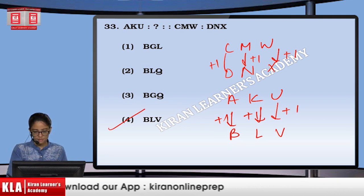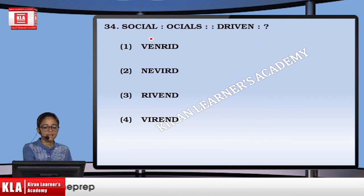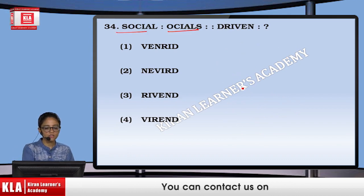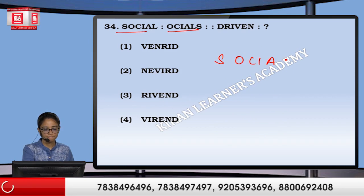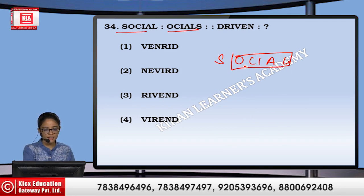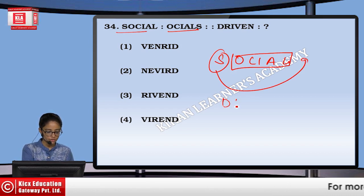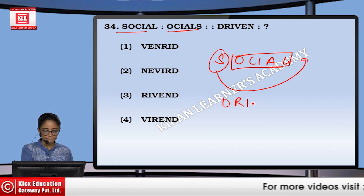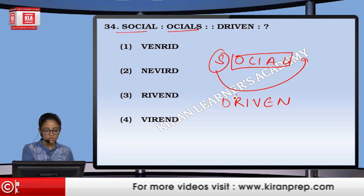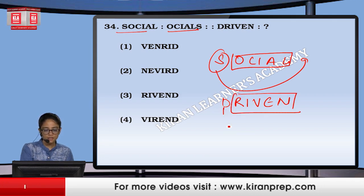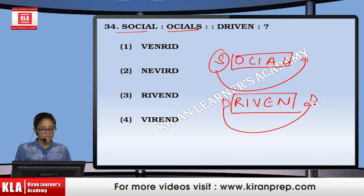Next again is an arrangement question. With the word SOCIAL, letters are rearranged with S at the last. Similarly, for DRIVEN, R and D come forward — that becomes DRIVEN in rearranged form. That means option number 3.